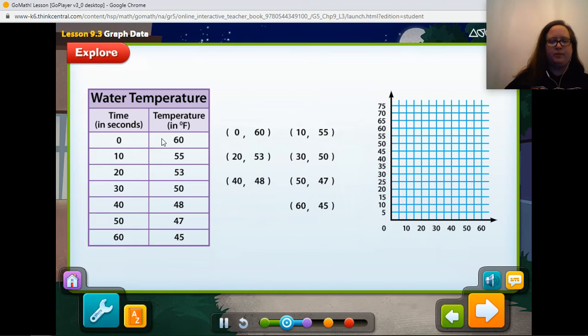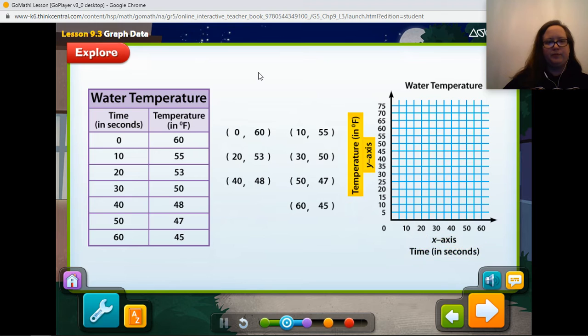Let's add a title to the coordinate grid, and also label each axis. So, you can easily just use the information that's given to you in your table. The coordinate grid is titled water temperature. The X axis is time in seconds. The Y axis is the temperature in degrees Fahrenheit.